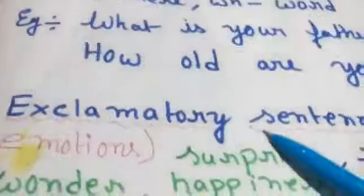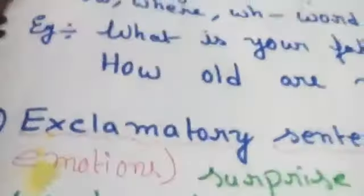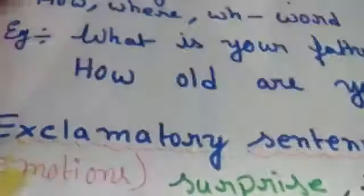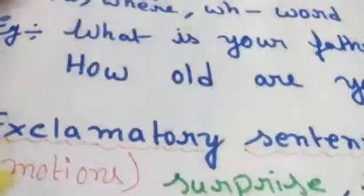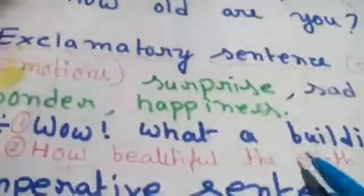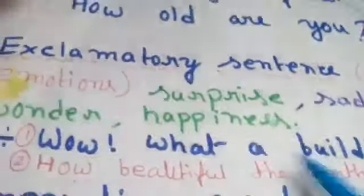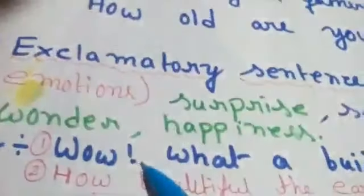Number three is the exclamatory sentence. In an exclamatory sentence, we express our emotions — hate, anger, surprise. For example: 'Wow!', 'What a building!', 'How beautiful the art is!' These are examples of the exclamatory sentence. In this sentence, the exclamatory sign will come at the end.